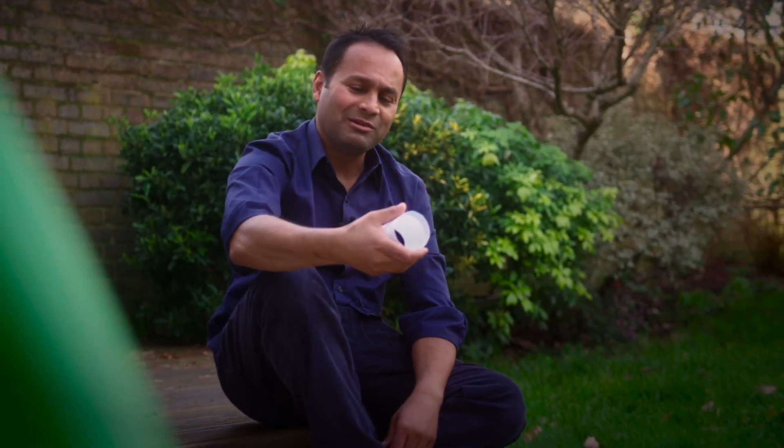So the secret to making this fly is to give it a spin as you throw it. Hold it like this as if you're going to throw it underarm and as you move your hand forward, rotate your wrist. So forward and rotate, forward and rotate.